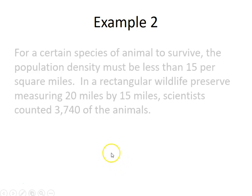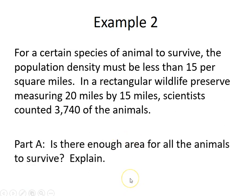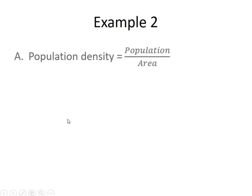Example two: for a certain species of animals to survive, the population density must be less than 15 animals per square mile. In a rectangular wildlife preserve measuring 20 miles by 15 miles, scientists counted 3,740 of the animals. Part a asks: is there enough area for all the animals to survive? Population density equals population divided by area.